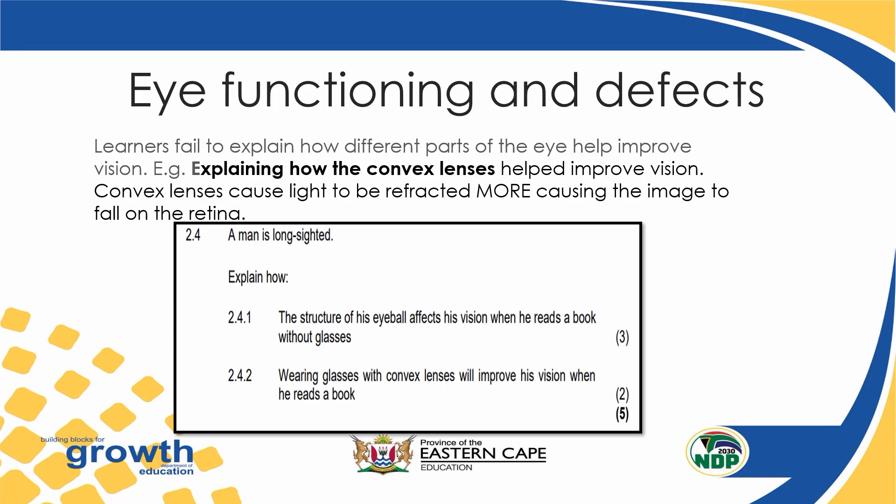Why is it important that the image focuses on the retina? On the retina is where your photoreceptors are situated so that the stimulus can be changed into an impulse. If there is no stimulus changed into an impulse, then your sight will not be registered in your mind. The question refers to the structure of the eyeball which affects the person's vision when reading without glasses. Because the eyeball is too rounded, it causes the image to fall behind the retina, where there are no photoreceptors.